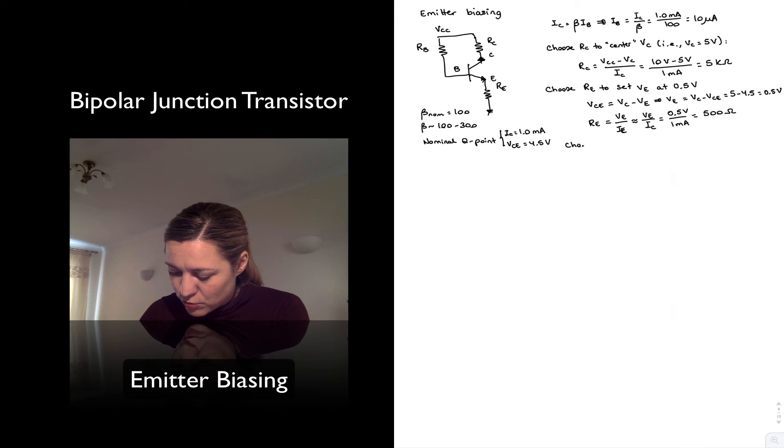So choose RB to set IB to 10 microamps. And RB is going to be equal, again, by Ohm's law, VCC minus VB divided by IB.